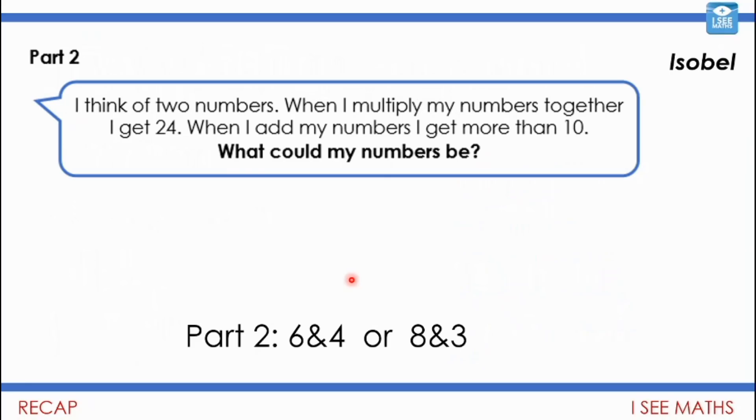Now also a big thank you and a big well done to Isabel. She noticed something. This was the question I wrote as part two on task A on Friday. I think of two numbers. When I multiply my numbers together I get 24. When I add my numbers I get more than 10. What could my numbers be? And in the answers I'd written six and four and eight and three. Now Isabel noticed and told me fairly quickly that's not right Gareth. Pause the video. What did she notice?